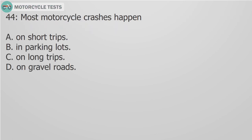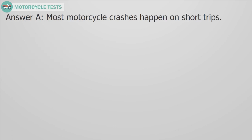Question 44. Most motorcycle crashes happen: A. On short trips. B. In parking lots. C. On long trips. D. On gravel roads. Answer A. Most motorcycle crashes happen on short trips.